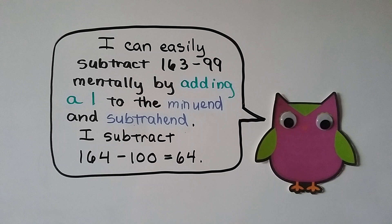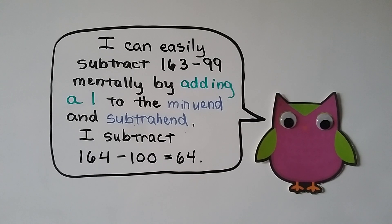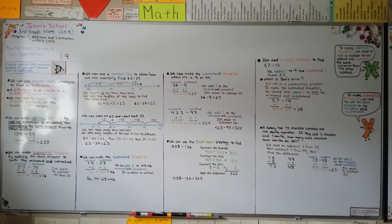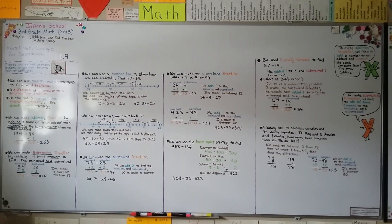For mental math, we can easily subtract 163 minus 99 by adding 1 to both the minuend and subtrahend: 164 minus 100 equals 64. You can try these strategies to see how well you can do mental math subtraction. In our next lesson we'll be regrouping to subtract three-digit numbers. Hope to see you there — have a great day!